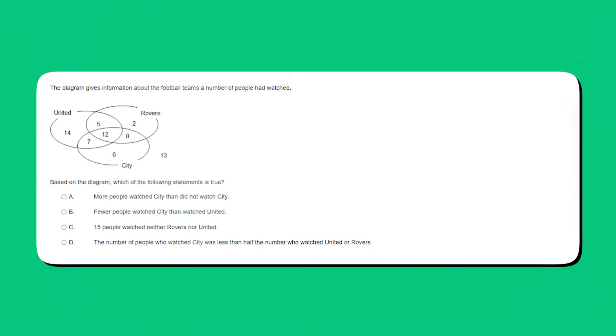Let's take a look at an example. The diagram gives information about the football teams a number of people had watched. Based on the diagram, which of the following statements is true? Take a minute to see if you can figure this one out.